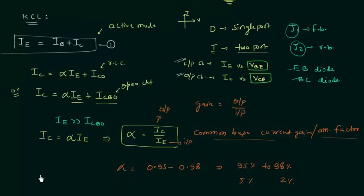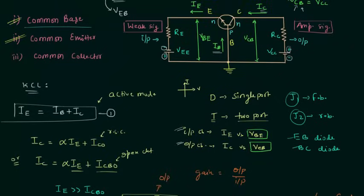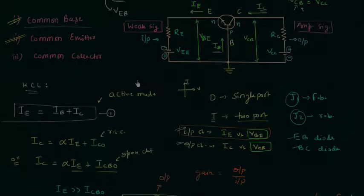The base current IB equals (1 − alpha) times IE. These are the important relations to note down. In the next lecture, I will explain how to obtain the input characteristics in the case of the common base transistor.